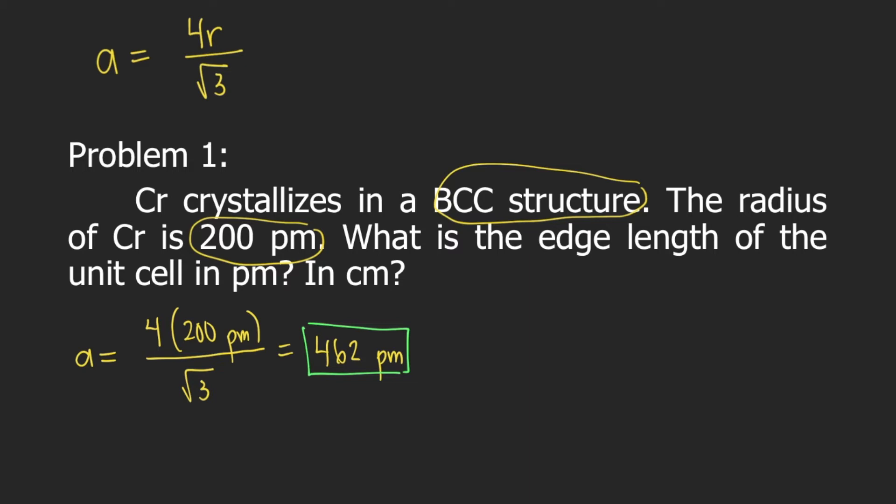The problem is also asking for the edge length in centimeters. So what you need to do is convert 462 picometers to centimeters. The conversion is 1 picometer is equivalent to 1 times 10 to the negative 10 centimeters. So you put 1 picometer on the bottom and on top you put 1 times 10 to the negative 10 centimeters so that picometers will cancel out and the unit becomes centimeters.